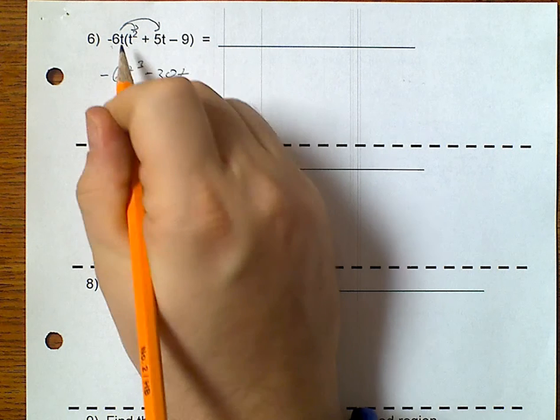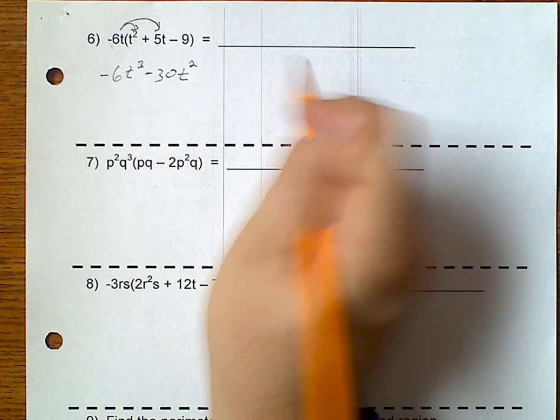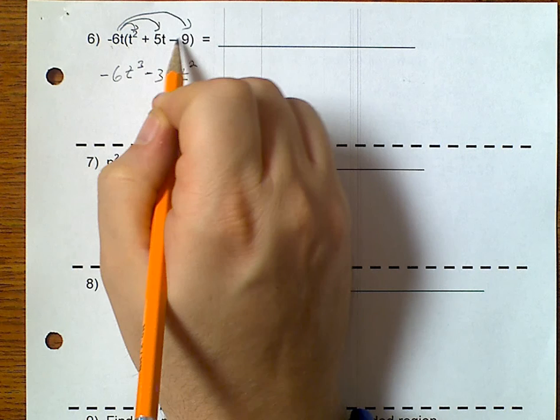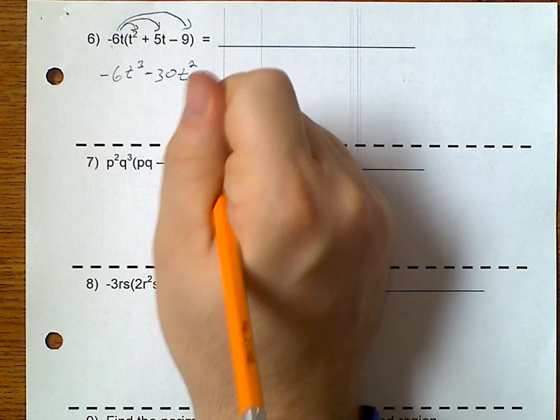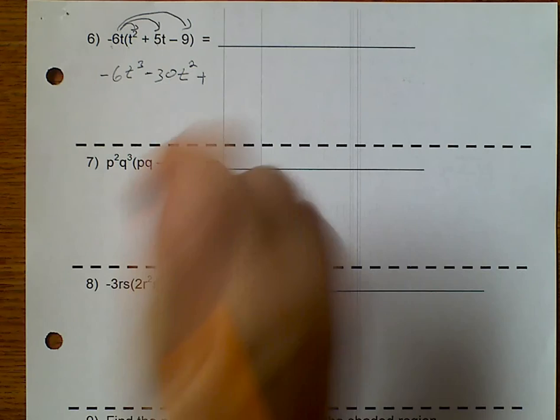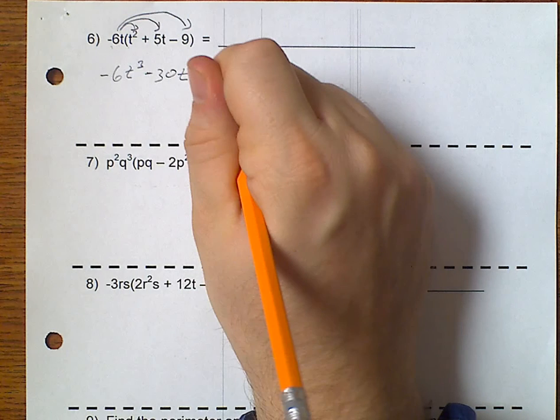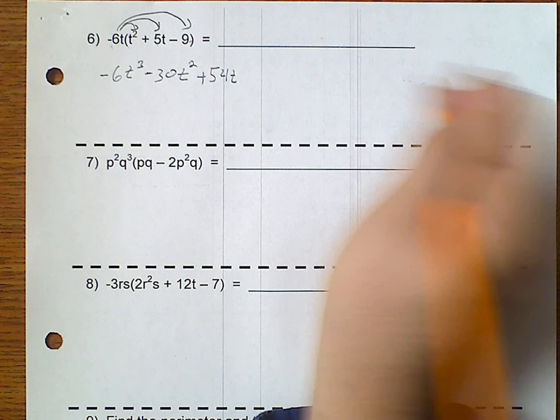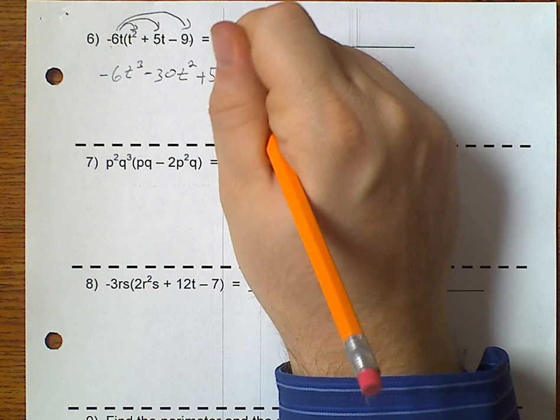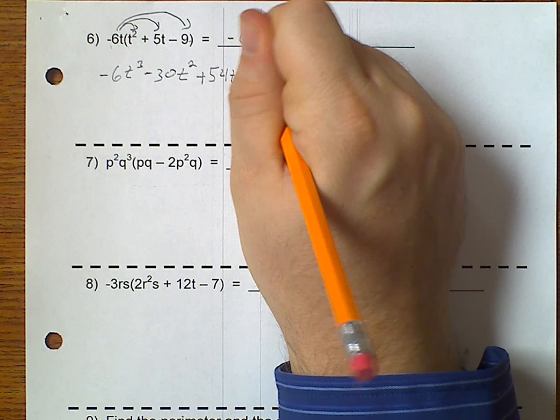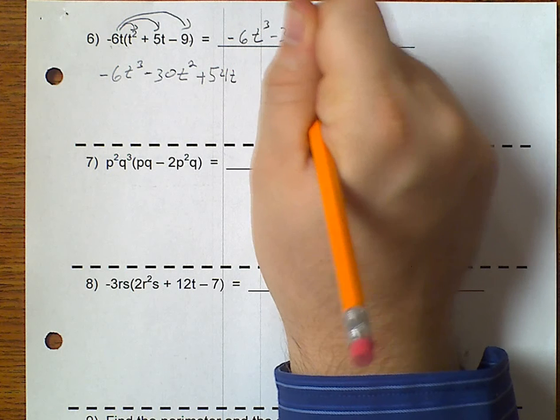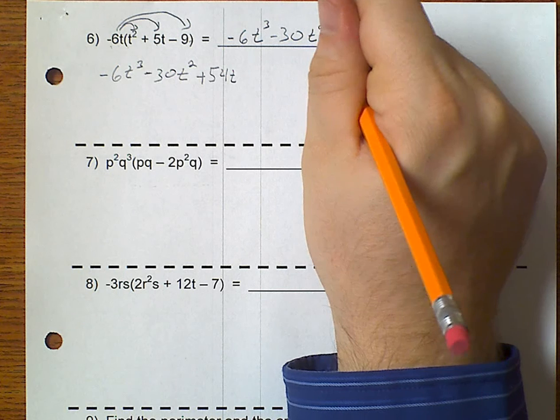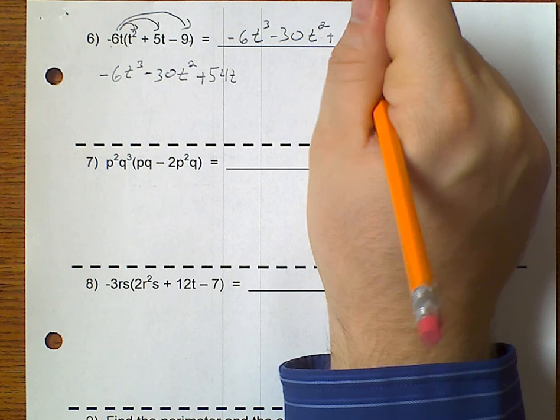Negative 6 times 5 gives me a negative 30. I have 1, 2 t's, so that's t squared. And, a negative 6 times a negative 9 is a positive 54. I've got a t here, I've got nothing over here. So, that would just be t.